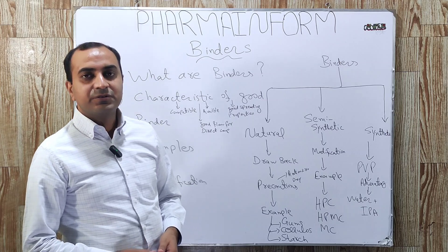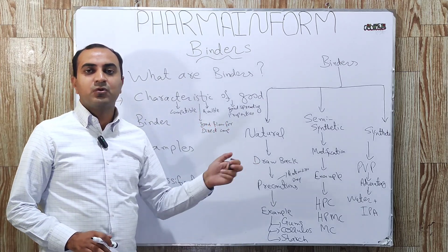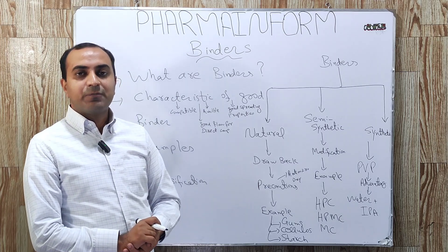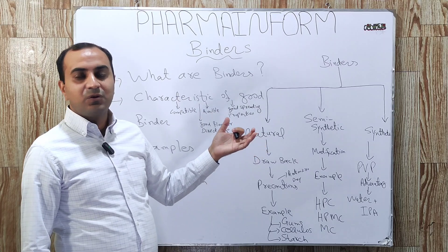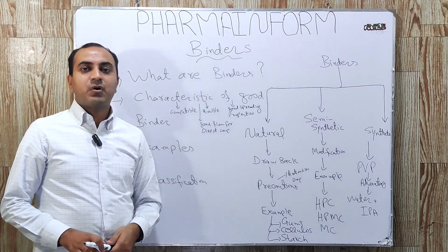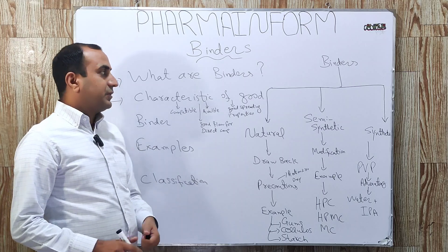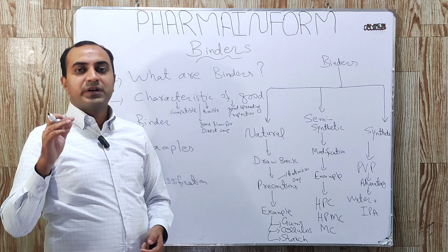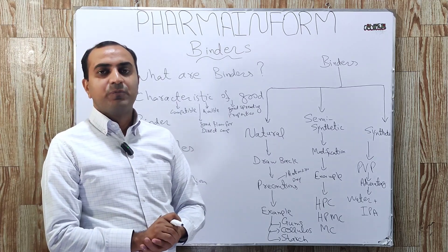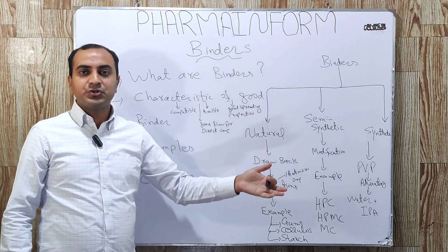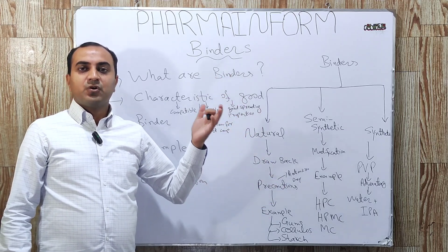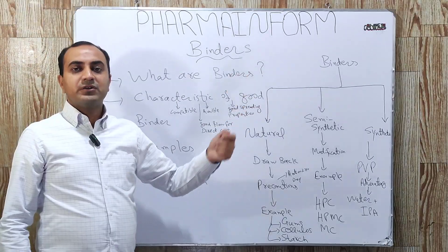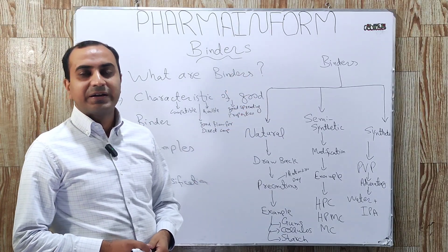An example of a dry binder is microcrystalline cellulose, commonly known by the brand name Avicel. This is known as a dry binder because it gives strength and binding to the powder particles to form the tablet. Binders can be used in powder form, or they can be used in solution form — meaning we can use a binder to prepare a solution, suspension, or paste.